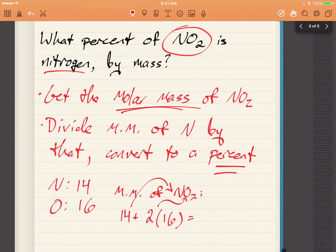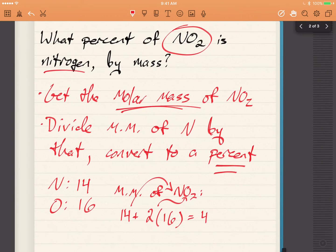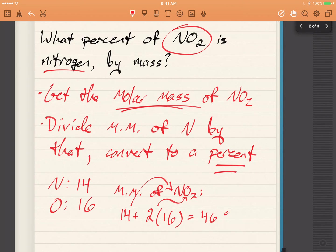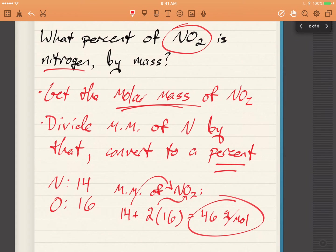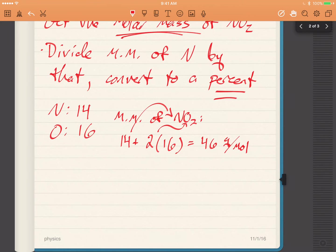2 times 16 is 32, plus 14 will be 46 grams per mole. That's the molar mass. We're not done yet. I only circled it to say that we had completed one part of it. And then divide the molar mass of nitrogen by that.